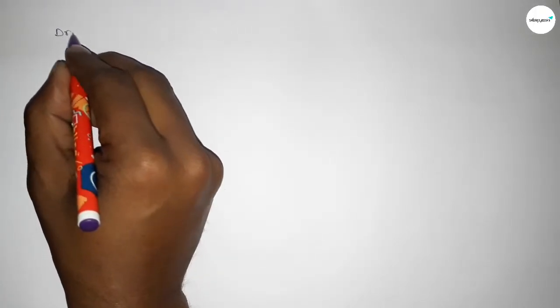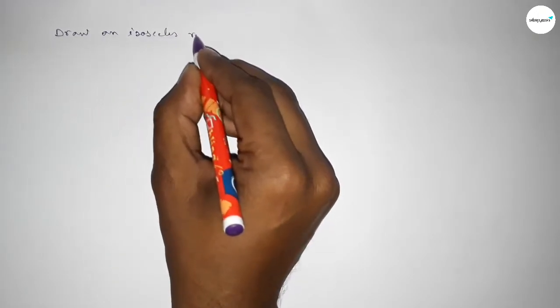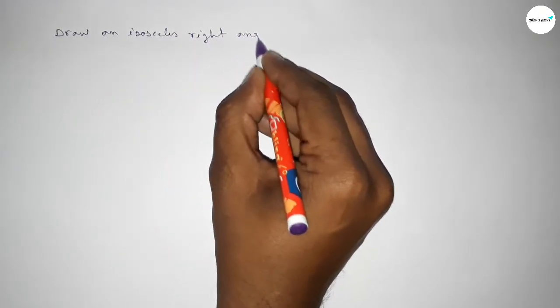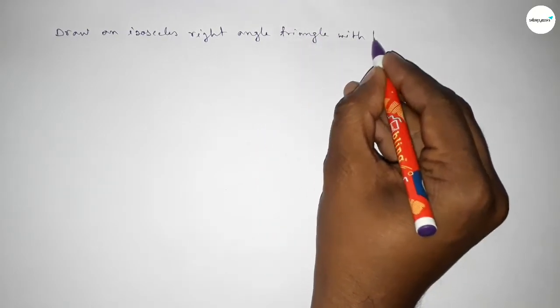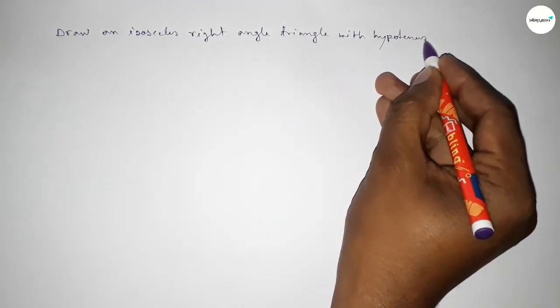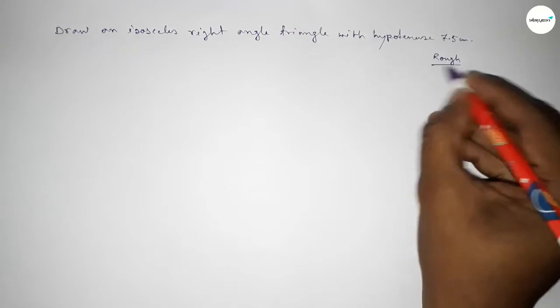Hi everyone, welcome to SI Share Classes. Today in this video we have to draw an isosceles right angle triangle with given only hypotenuse 7.5 centimeters. So let's start the video. First of all, roughly discussing here the calculation first.